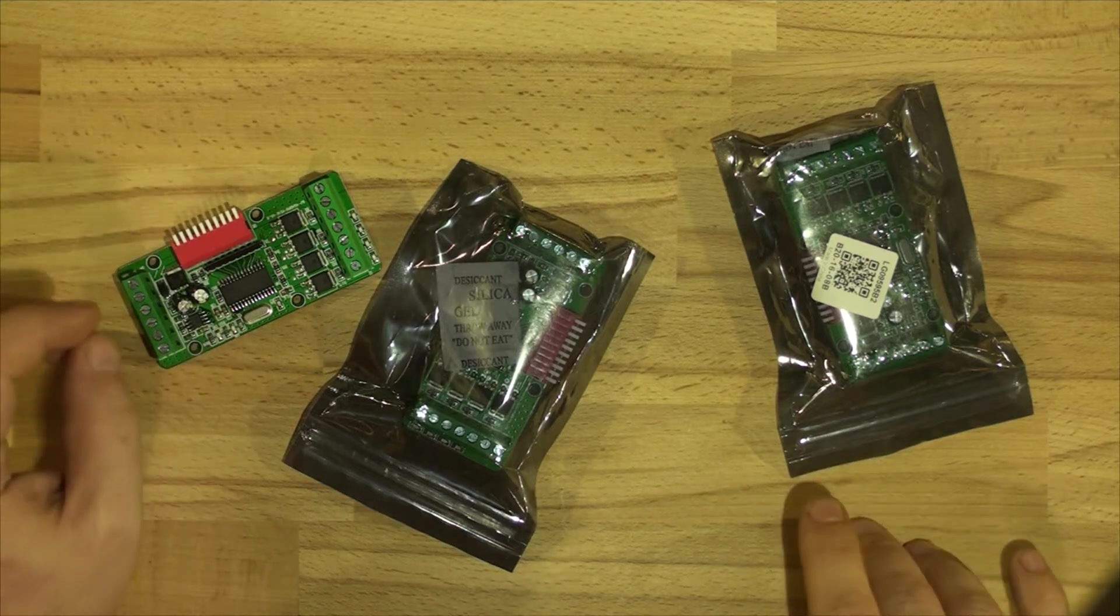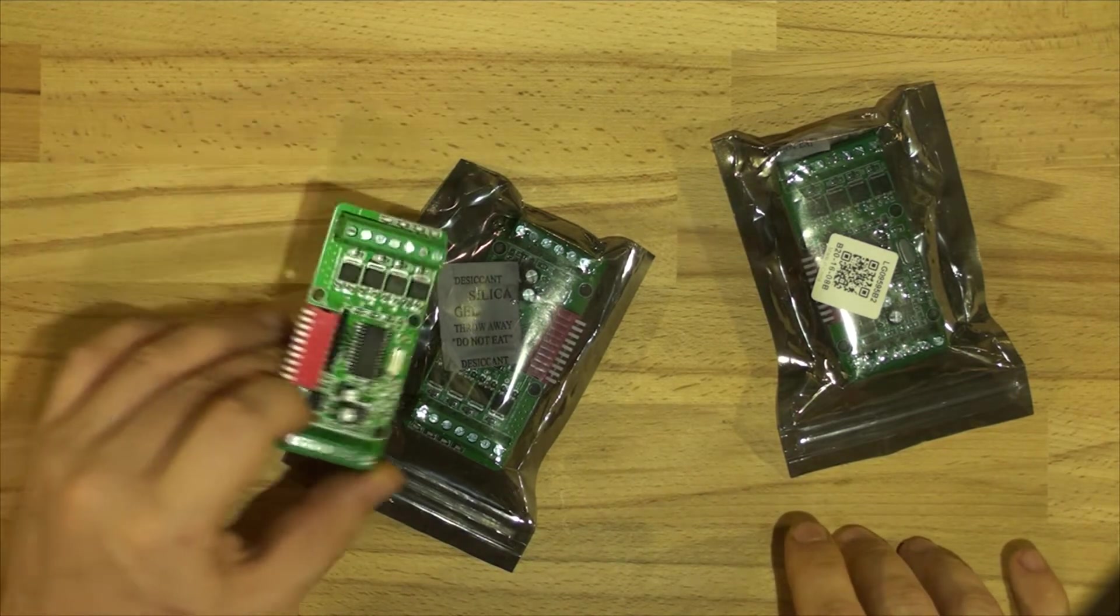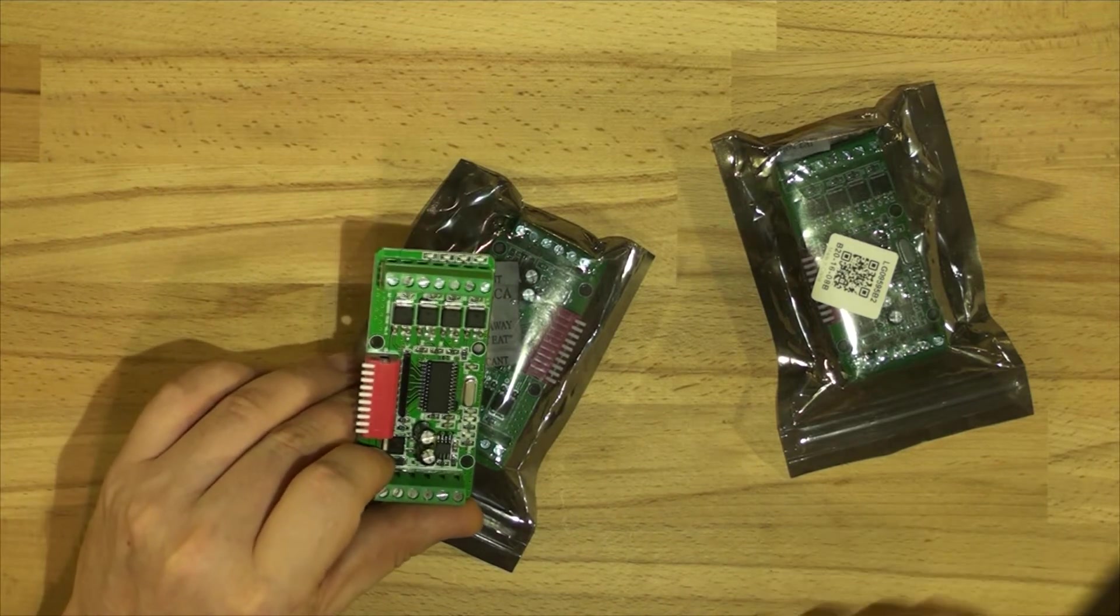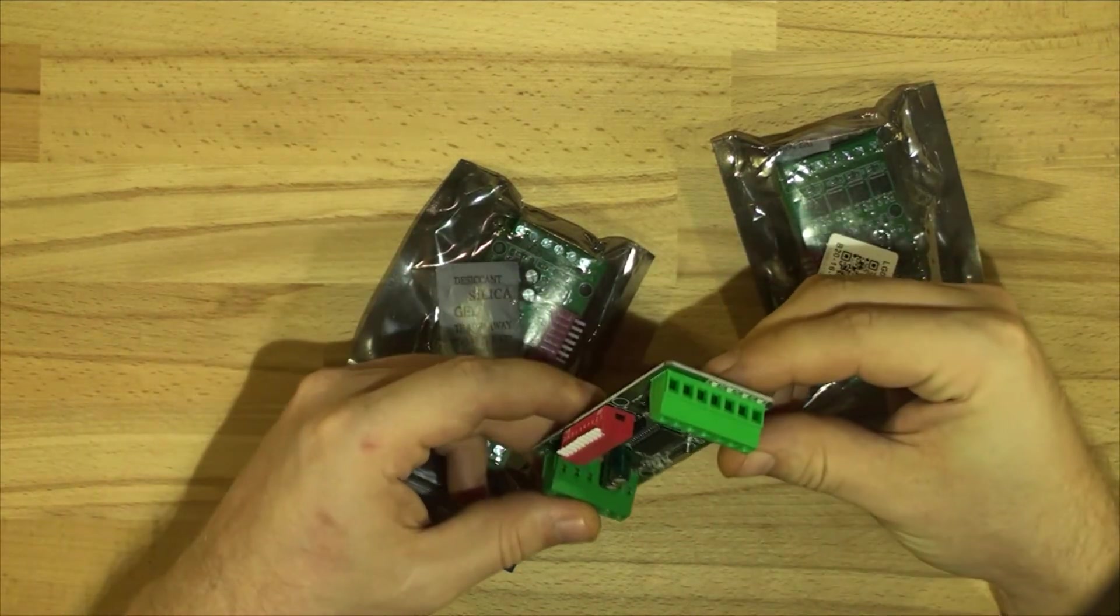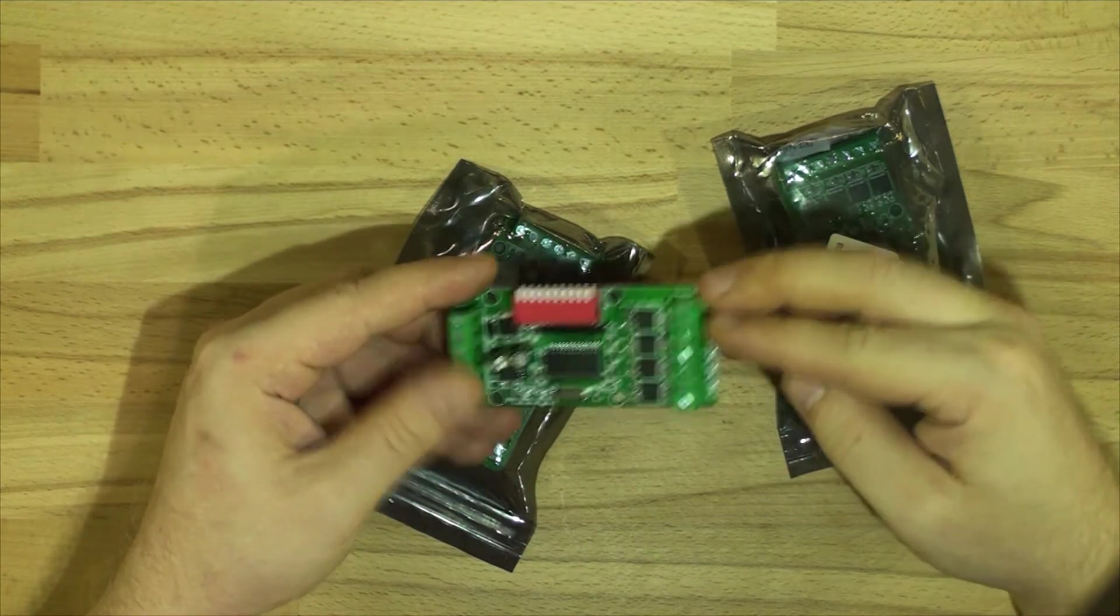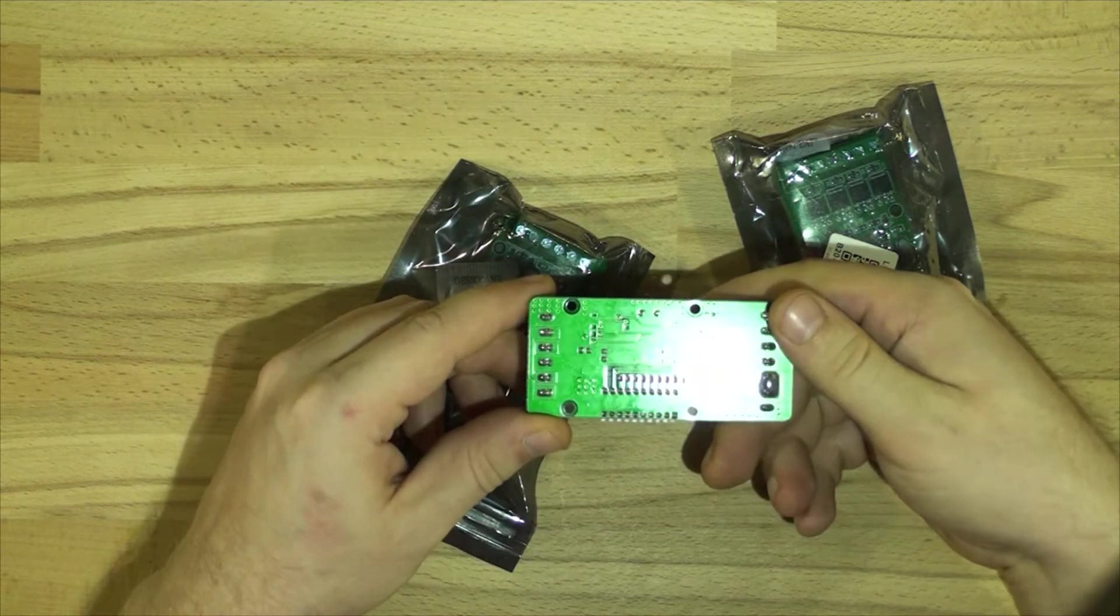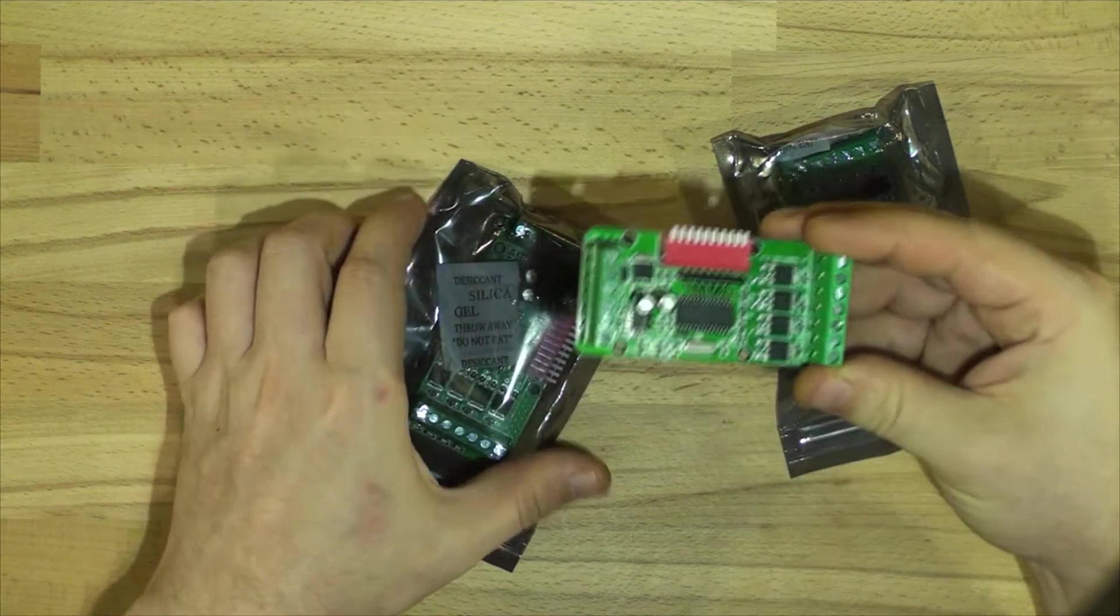This is a four channel DMX decoder and dimmer, which is a simple arrangement. You get four channel outputs: red, green, blue, white, power in, and then DMX in and out which is just direct through.